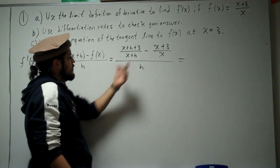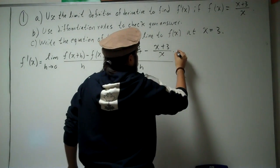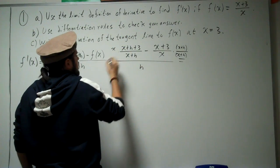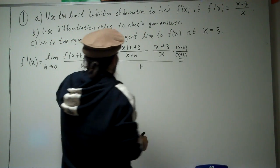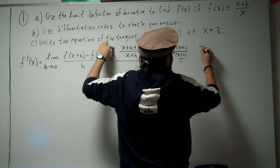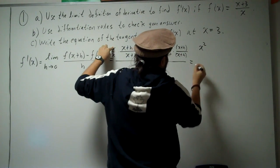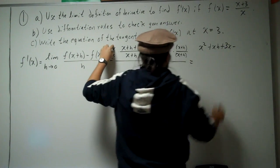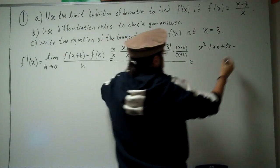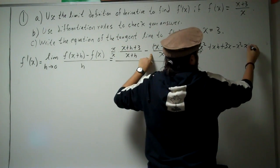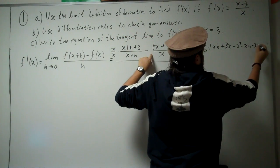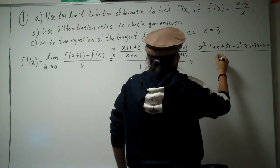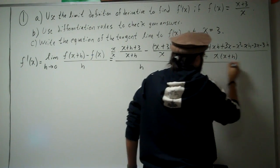Now we need to combine the two fractions by finding the LCD. The LCD is x times x plus h, so we multiply accordingly and distribute. We get x squared plus xh plus 3x minus x squared minus xh minus 3x minus 3h, all divided by x times x plus h, then divided by h.